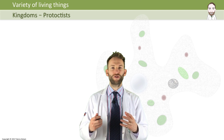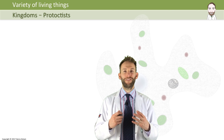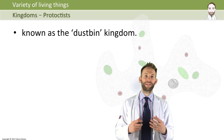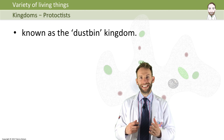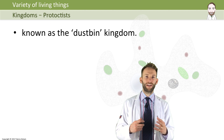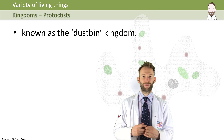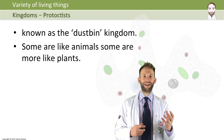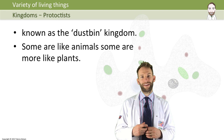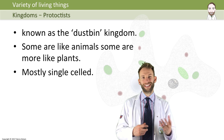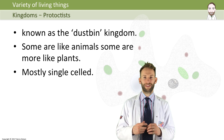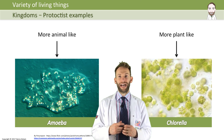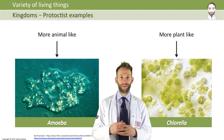Protoctists are a strange collection of organisms. They don't really fit into any other groups — they're often referred to as the dustbin kingdom, because basically if it's not clearly a plant, animal, or fungi, it might end up in protoctists. Some organisms here have animal-like characteristics, some have more plant-like characteristics. They're nearly all single-celled and usually very basic organisms. An animal-like example would be an amoeba, and a plant-like protoctist would be something like chlorella.